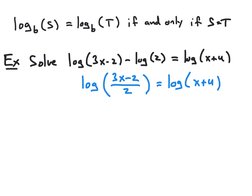Now we're in the same format as our one-to-one property. We have the log of one expression — in particular (3x minus 2) over 2 — equal to the log of another expression, x plus 4. Since those are both common logs, we can use the one-to-one property to conclude that (3x minus 2) all over 2 is going to equal x plus 4.